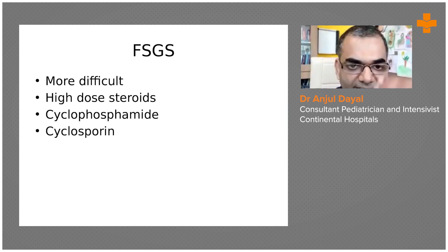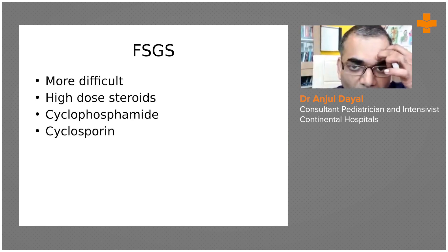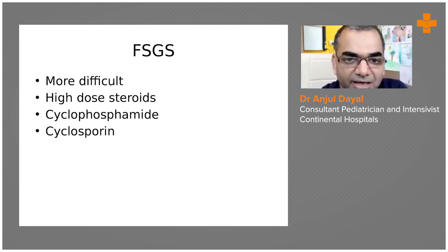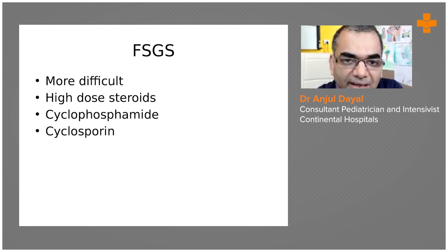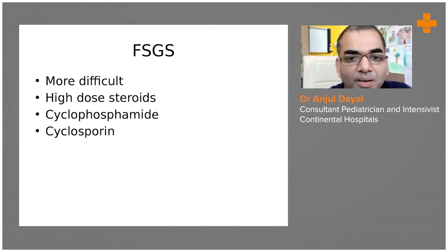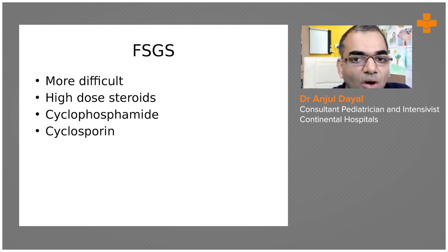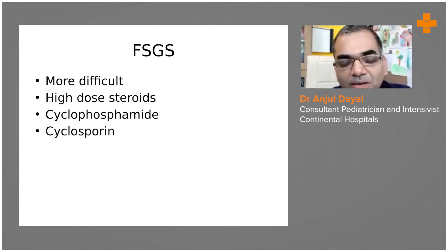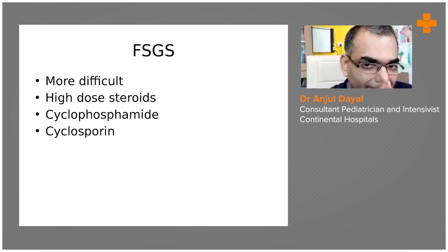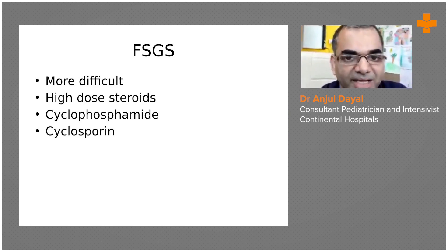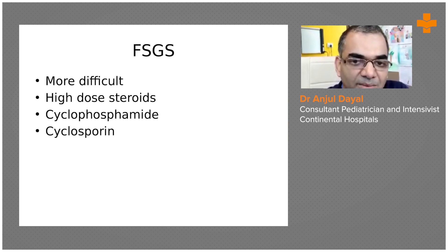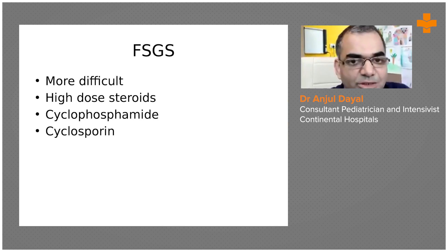The third important aspect is to identify, either at the beginning or later, when the child does not respond or has a relapse — look for secondary causes or other conditions like membranoproliferative disease, FSGS, IgA nephropathy, or membranous glomerulonephritis. Treatment of complications is equally important as treatment of the primary disease.